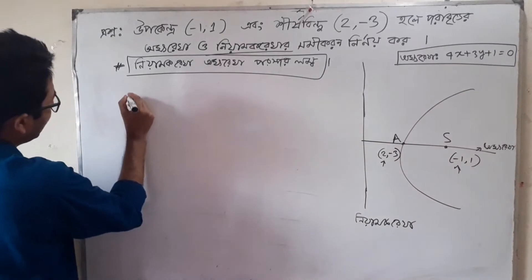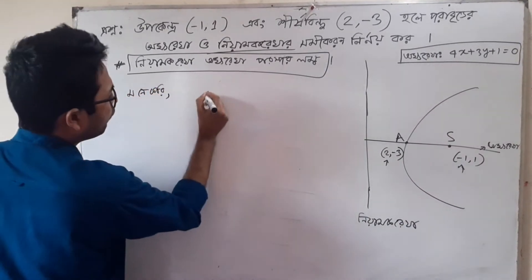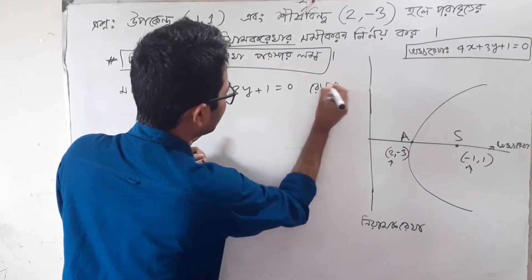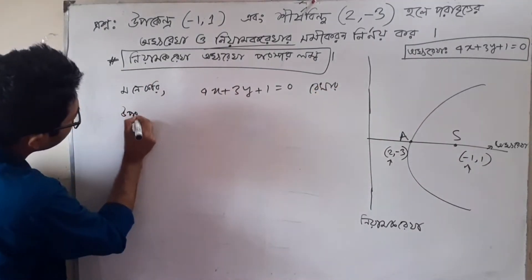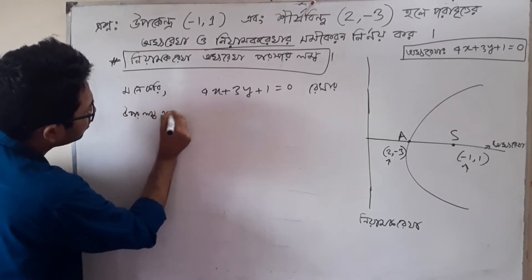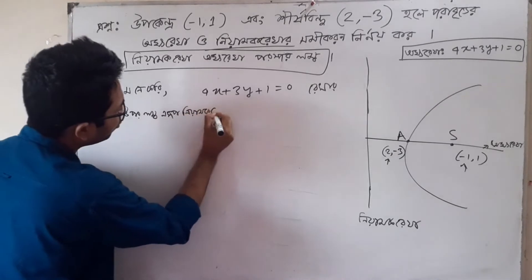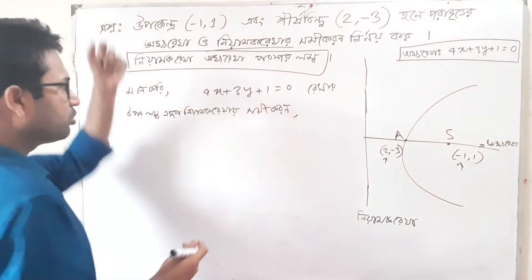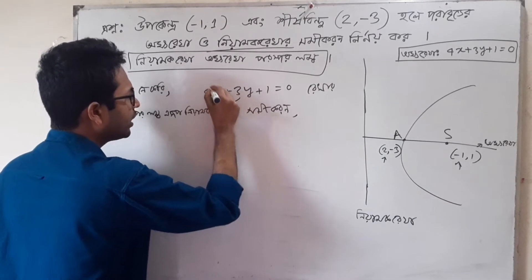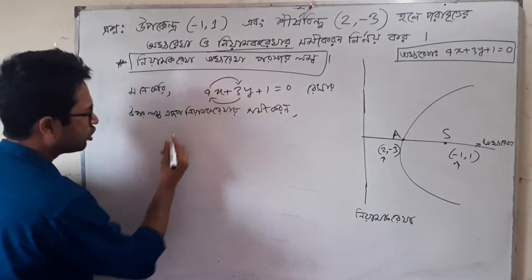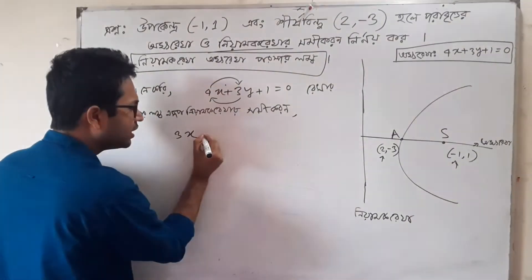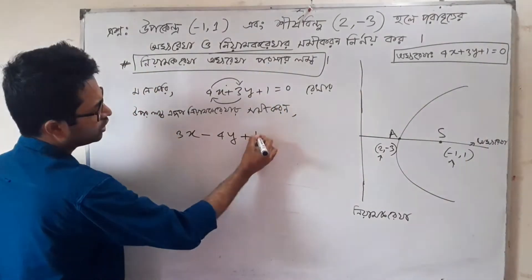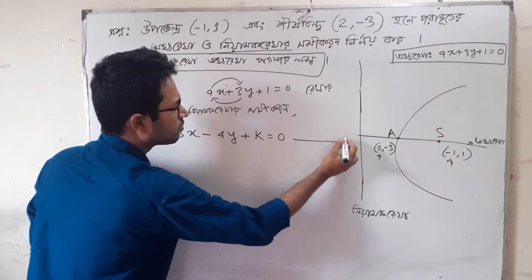We will take the same number of this, and we will take the same number of 4x plus 3y plus 1 equal to 0. We will take the same number of this. The constant has changed; our monoclonal constant is what we have to do now.